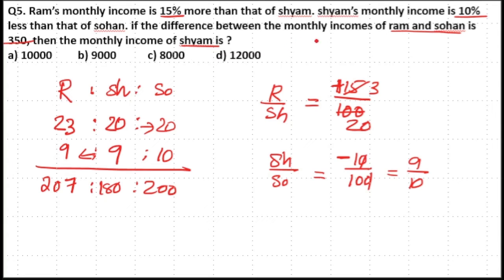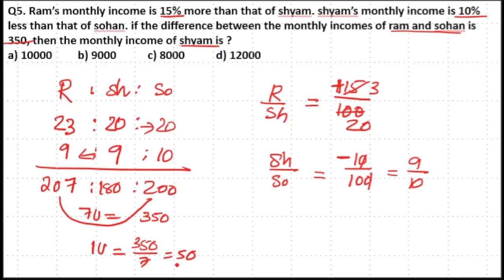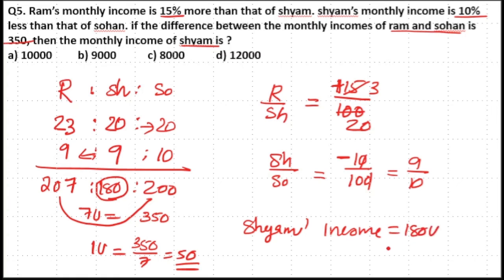The difference between monthly income of Ram and Sohan is 207 minus 200, which is 7 units equal to 350. So 1 unit equals 350 by 7, that is 50. Shyam's income is 190 units, so 190 into 50 equals 9500. Option B is your answer.